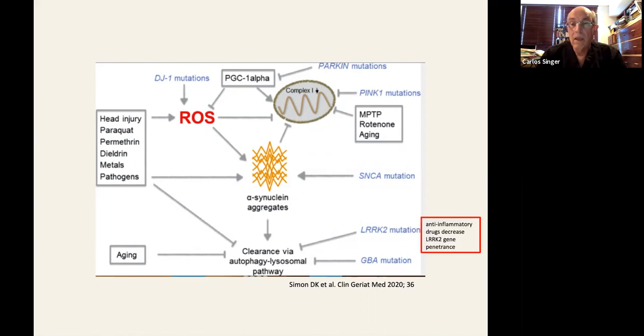Just as an example of gene-environment interaction, there has been a recent report in Movement Disorders, where they described that the use of anti-inflammatory drugs decrease the penetrance of those who have the LRRK2 mutation.